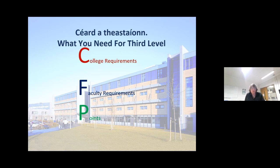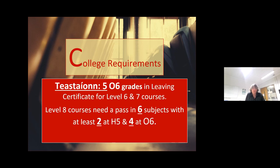What's involved in third level? There are college requirements, faculty requirements, and points. In the college requirements, for example, you need five ordinary O6 grades in your Leaving Certificate if you choose a level six or seven course. For level eight courses, you need a pass in six subjects, which must include at least two at H5 and four at ordinary O6 — that's the minimum requirement. But as we all know, depending on the course you apply for, you would need probably all honours grades. The minimum entry requirements for those courses are as I mentioned.